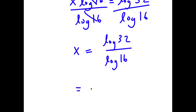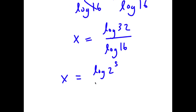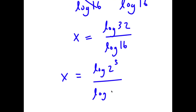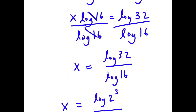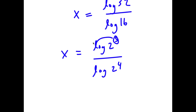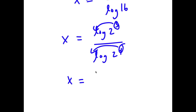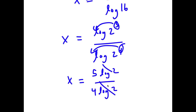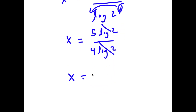Now log 32 is the same thing as log 2 to the power of 5, and log 16 is the same thing as log 2 to the power of 4. Remember, if I have something in the form log a to the power of b, I can move my exponent to the front. So now I have 5 times log 2 over 4 times log 2. These two log 2s cancel out, so I'm left with x equals 5 over 4.